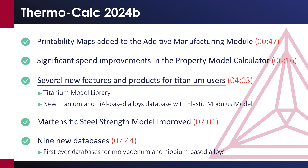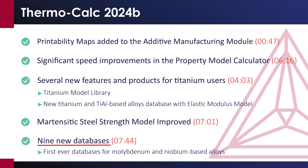Several new features and products for titanium users are included, such as a titanium model library and a new titanium aluminide based alloys database, and more. This release also includes nine new databases, including our first-ever databases for the refractory alloys molybdenum and niobium.